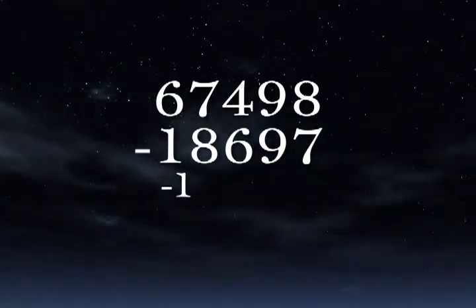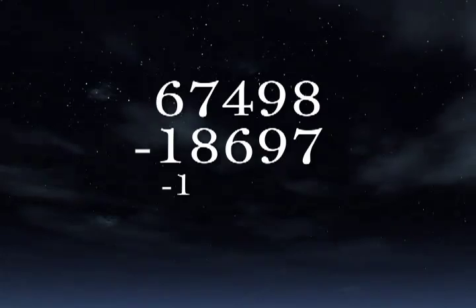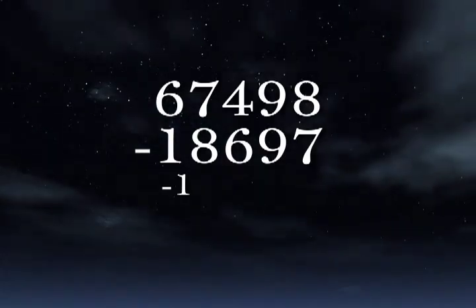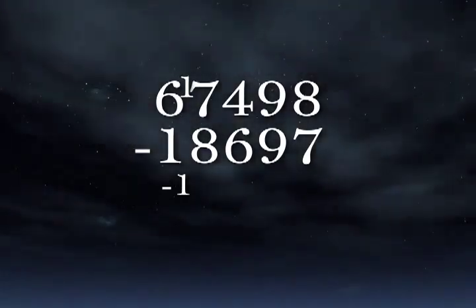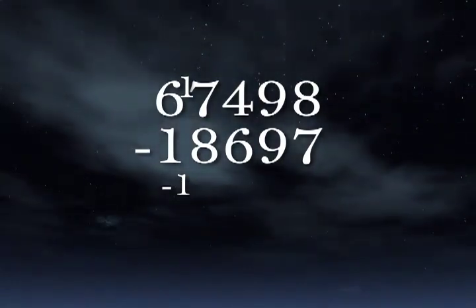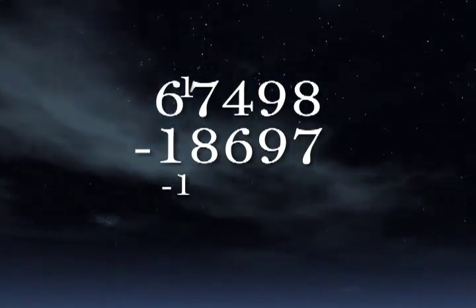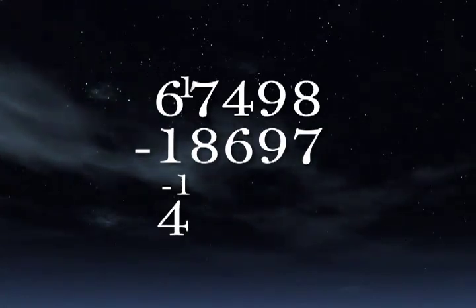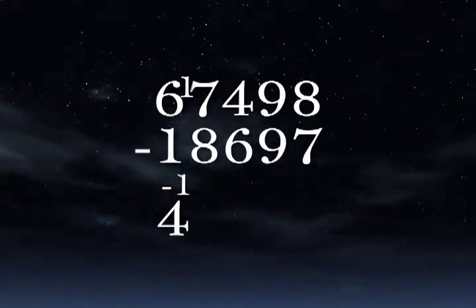We indicate that by writing negative 1 just above where the first answer digit will go, and a 1 to the left of the 7 in the next column. 6 minus 1 is 5, and as indicated, we write 4. 17 minus 8 is 9.